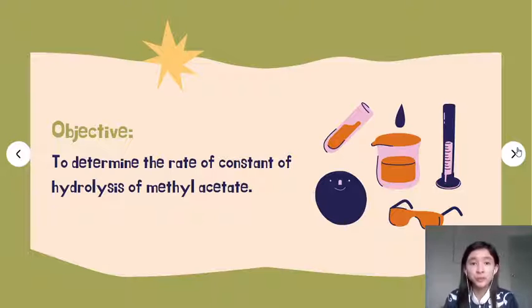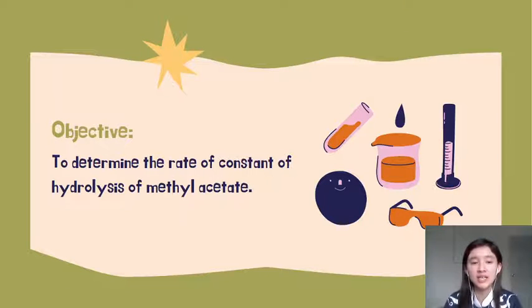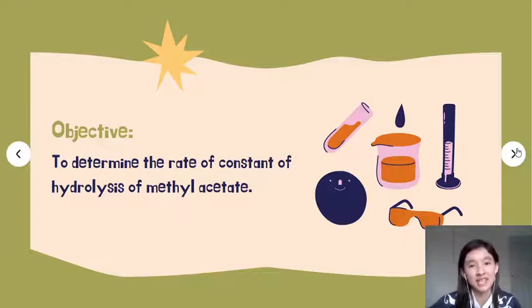The objective of this experiment is to determine the rate constant of hydrolysis of methyl acetate. The key finding of this experiment is the rate constant. In this experiment, you need to calculate the rate constant. It's very simple, so let us proceed to the next page.